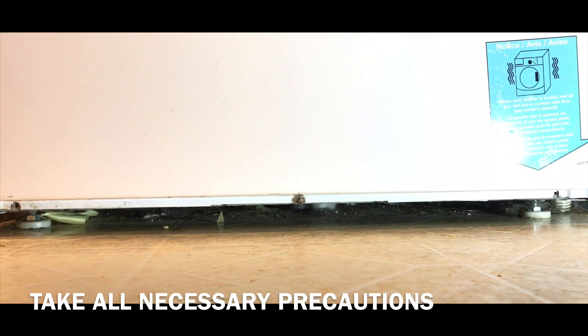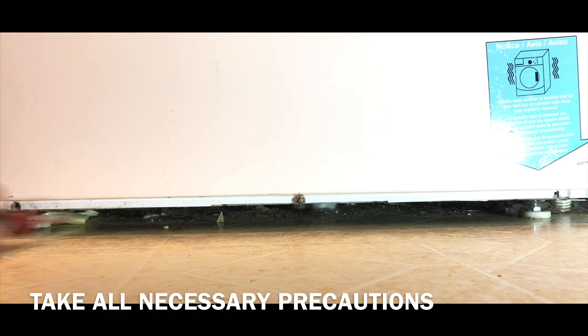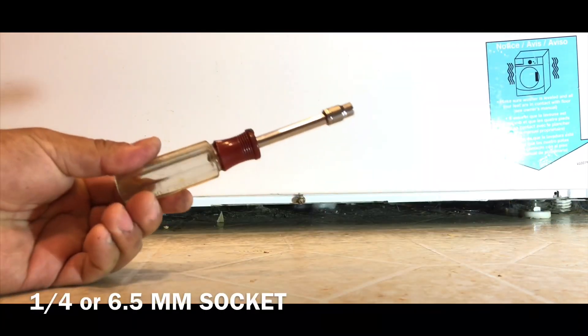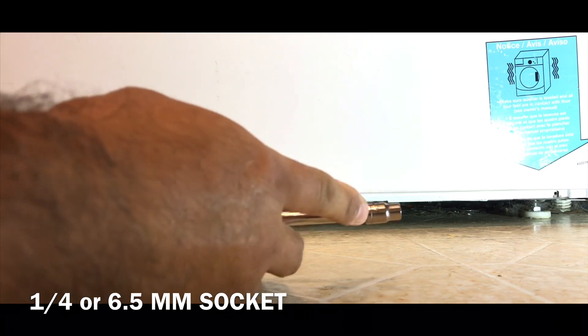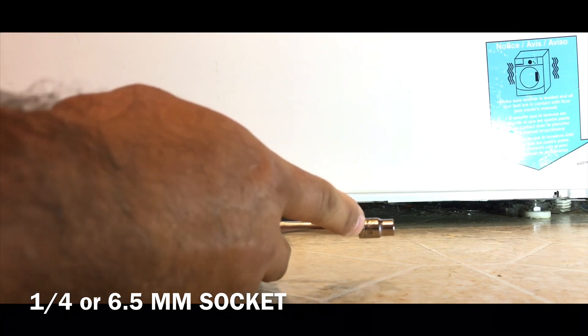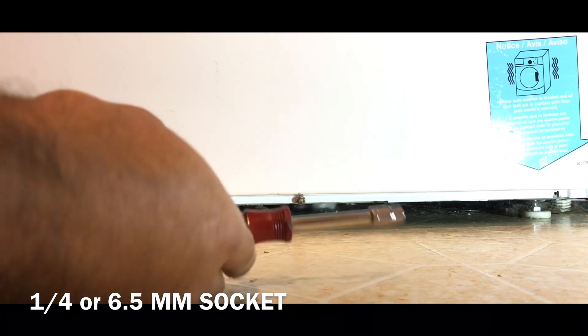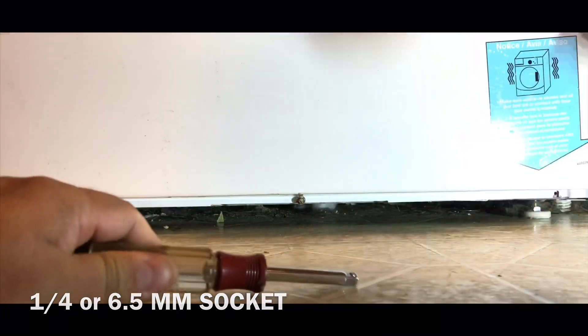Just go on the bottom of the machine. There are three screws: one here, one here, and one here. You use one of these. This one says 6.5. I think it's one quarter.